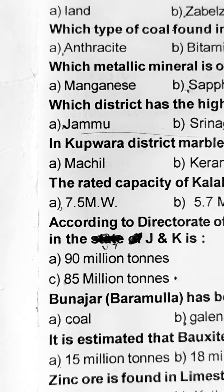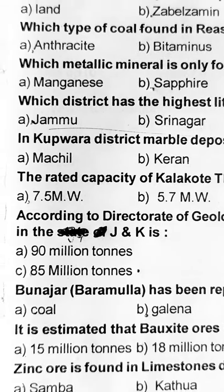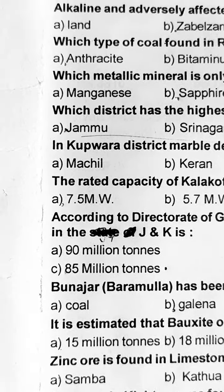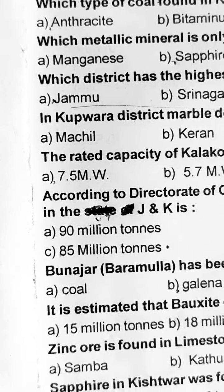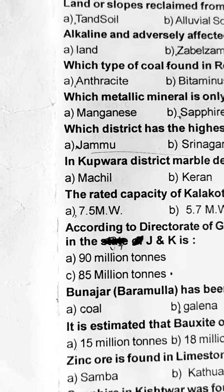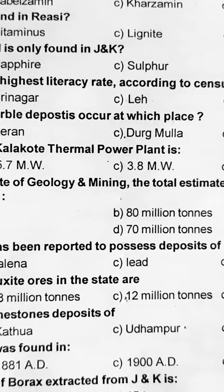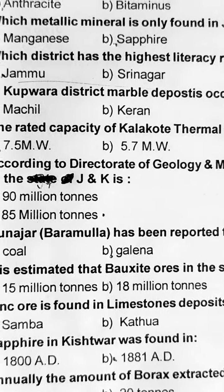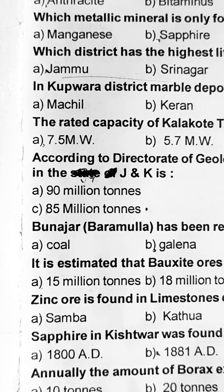Next: the rated capacity of Kalakot thermal power plant is — A part, 7.5 megawatt. According to Directorate of Geology and Mining, the total estimated reserves of lignite of J&K is — option hai C part, 85 million tons.